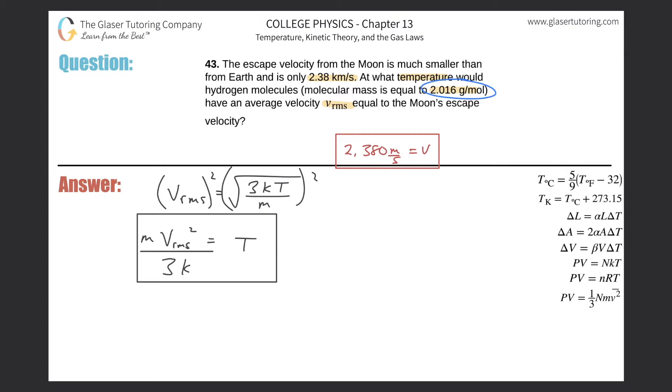They gave us the mass per mole and we need to know mass per molecule. How do we do that? We're going to take the 2.016 grams per one mole and we need to convert this into kilograms. Remember, mass in physics is going to be in kilograms divided by molecule. That's what we have to do.